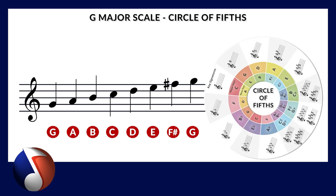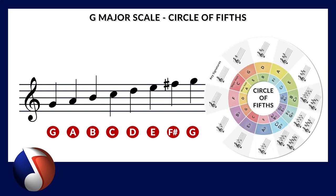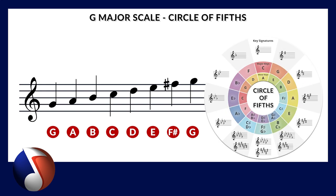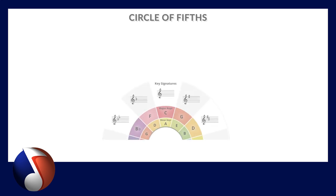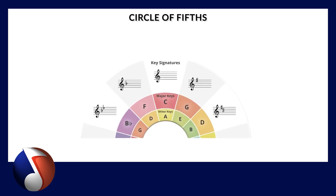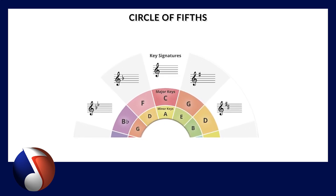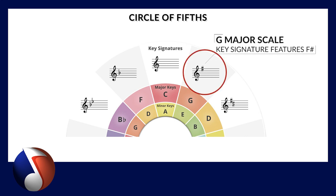The circle of fifths is a music theory tool that helps us to understand the relationship between musical keys. It's called the circle of fifths because each note is 5 notes away from the previous one. So if we start with C, the next note in the circle is G, then D and so on.